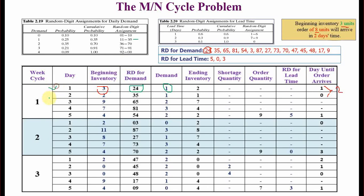Cycle one, day two: the beginning inventory is the ending inventory of day one, which is two. There is one sale on day two, so one product remains at the end. There is no shortage, no order quantity, no random digit for lead time. Days until order arrives is zero, meaning the next morning the order will arrive — eight units.